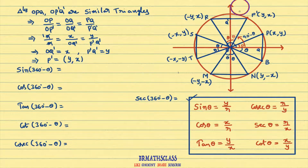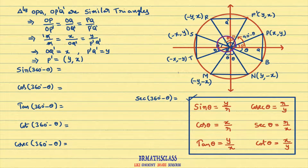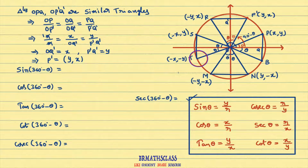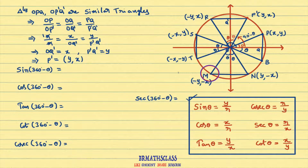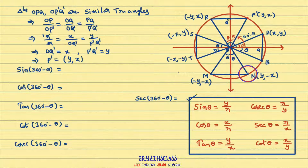In previous classes we learned trigonometric ratios for allied angle 90 degrees minus theta, trigonometric ratios for allied angles 90 degrees plus theta, 180 degrees minus theta, 180 degrees plus theta, 270 degrees minus theta, and 270 degrees plus theta.